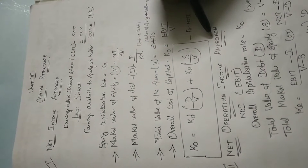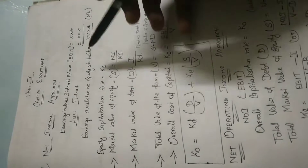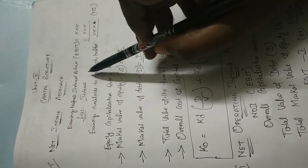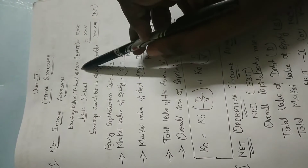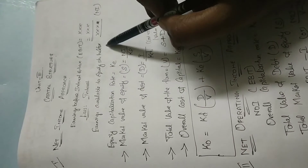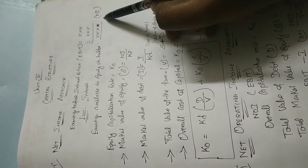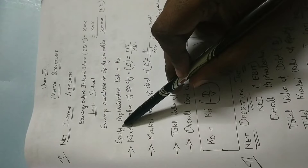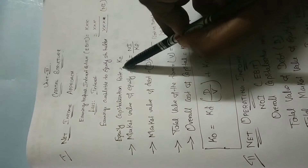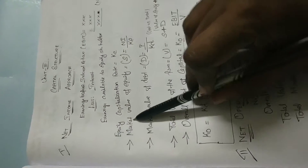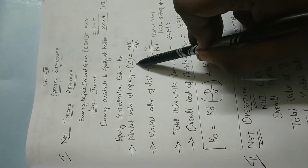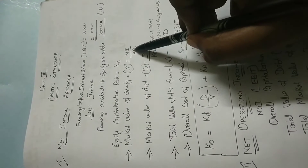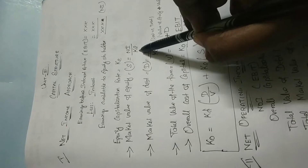First, we will see the formula for computing the net income approach. NI is equal to EBIT minus interest. That is earnings before interest and tax, less interest, which gives you the net income — that is nothing but the earnings available to equity shareholders. The equity capitalization rate is denoted as KE. Market value of equity is denoted as S, which is equal to NI divided by KE — net income divided by equity capitalization rate.